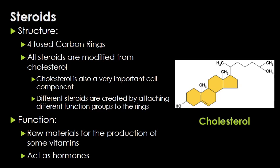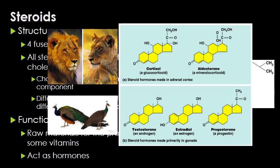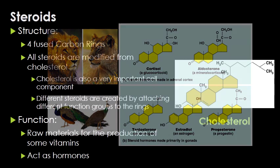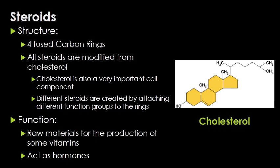The last major type of lipid is the steroids, which are made of four fused carbon rings. All steroids are modified from cholesterol, which you can see represented with those four rings. Different steroids are created by attaching different functional groups to the rings — for example, differences between testosterone and estradiol come down to functional groups. Changing a functional group can alter the hormone or steroid in extreme ways. Steroids act as hormones and provide raw materials for the production of certain vitamins. Unlike fats, this fused ring structure is different, but steroids are still grouped with lipids because they are hydrophobic and insoluble in water.